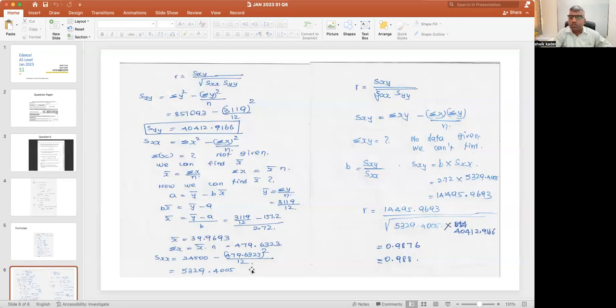So now sxx we found, syy we found, sxy we have to find. What is the formula? Sigma xy minus sigma x times sigma y over n. Sigma xy data is not given, so it is difficult to find sxy in this formula.